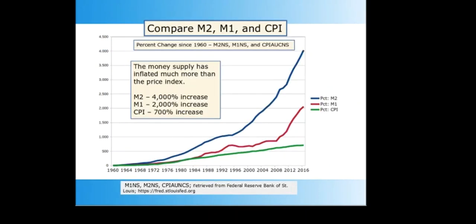Comparing M2, M1, and the CPI: the Consumer Price Index is a well-known measure of price inflation used to calculate cost of living adjustments, and it's the figure quoted in the media when they talk about inflation. The money supply has inflated much more than the CPI. M2 has shown a 4,000% increase, M1 a 2,000% increase, and the CPI has shown a 700% increase — all from 1960 up to 2016. Inflation-adjusted wages would not have increased anywhere near the increases in the monetary aggregates.